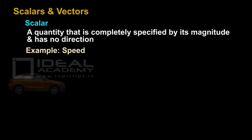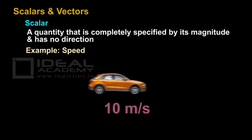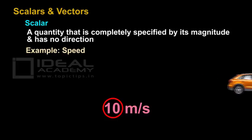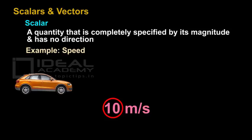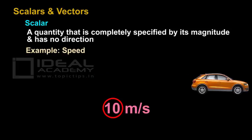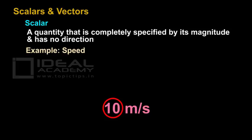One example of a scalar quantity is speed. When we talk of speed, let us suppose a car moves at 10 meters per second. This magnitude — that is 10 — completely describes the quantity speed. So if I say the speed of a car is 10 meters per second, the number 10 itself describes the speed completely.